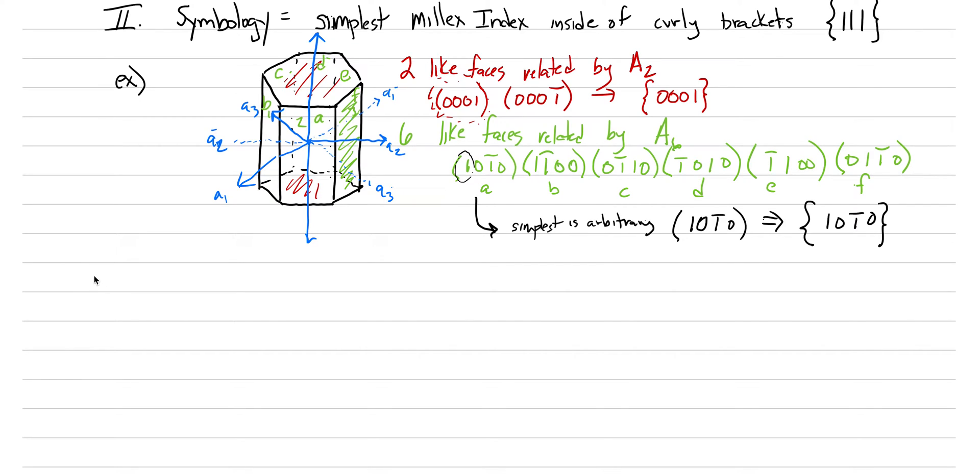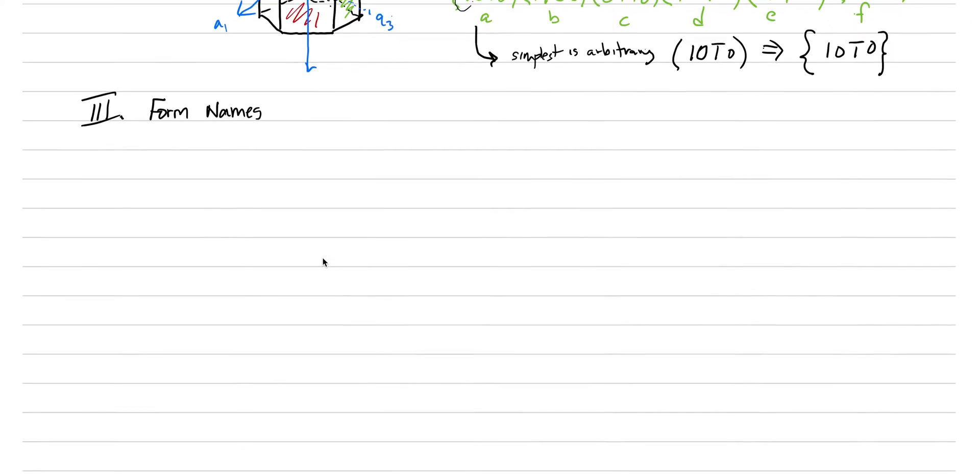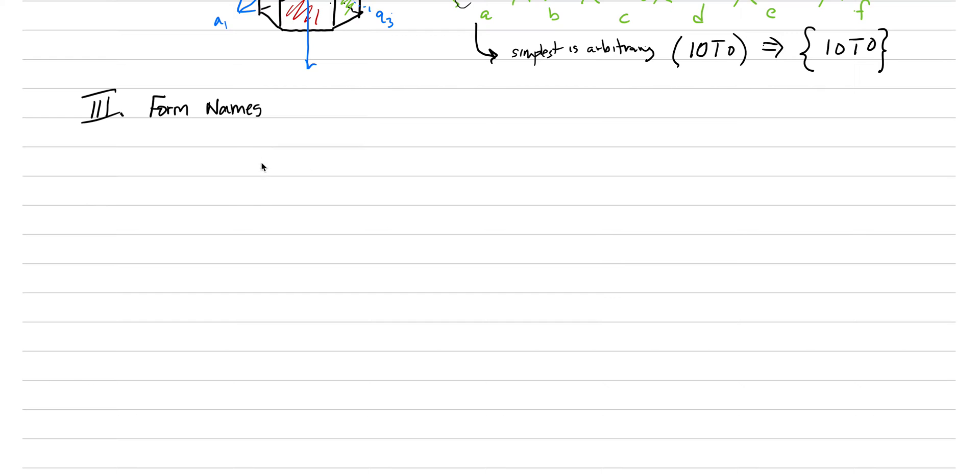We wrap up our study of crystallography with Roman numeral three under our major heading of crystal forms. In today's lecture, we're going to go through all the different form names that you could potentially see. The textbook has really good images on pages 134 to 142. There are a total of 48 forms that could occur, and we are going to look at 15 of the most common.